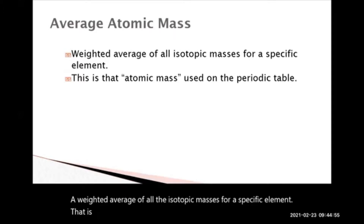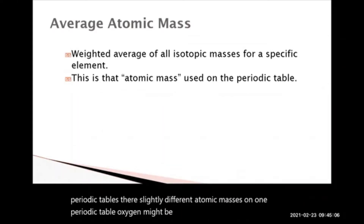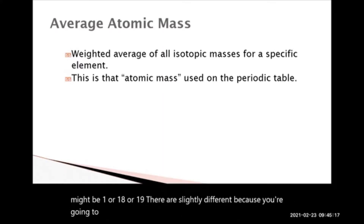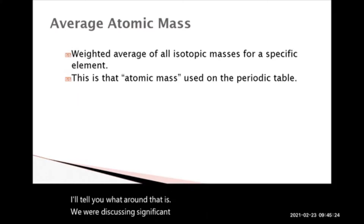That is the atomic mass used on the periodic table. That is why on all periodic tables, there are slightly different atomic masses — on one periodic table, oxygen might be 15.99, another might be 16. Hydrogen might be 1, or 1.008, or 1.009. They're slightly different because of rounding differences. That is when we're discussing significant figures — different periodic tables take into account different significant figures.